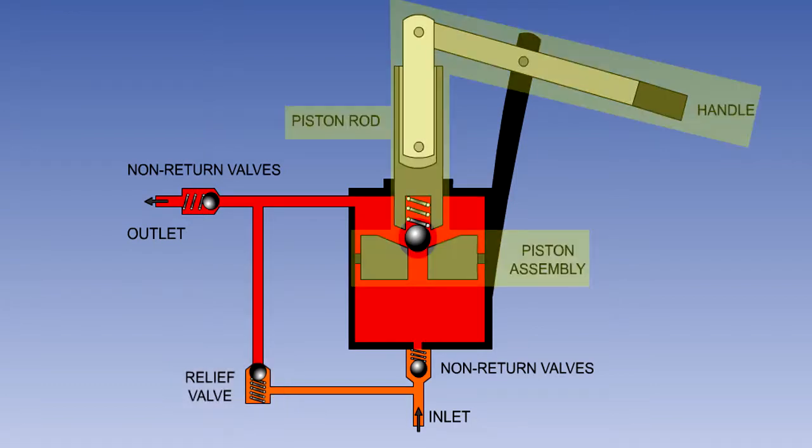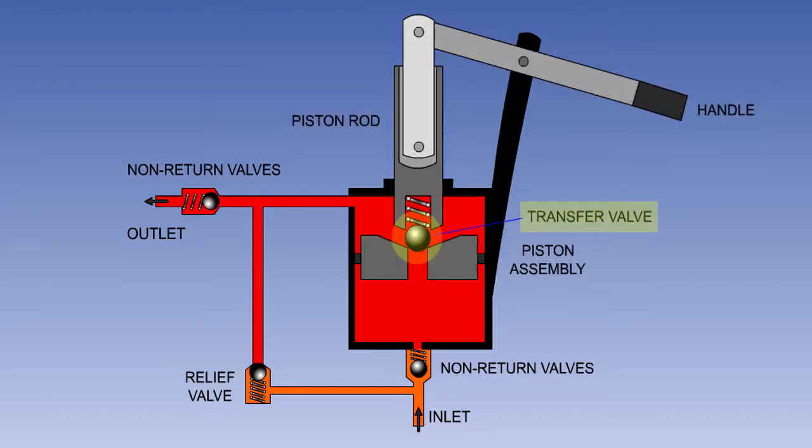The piston assembly is connected to the operating handle by the piston rod. In the center of the piston, there is a transfer valve which is spring-loaded to the closed position.